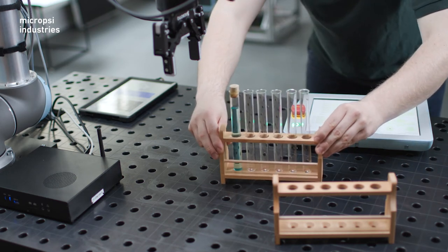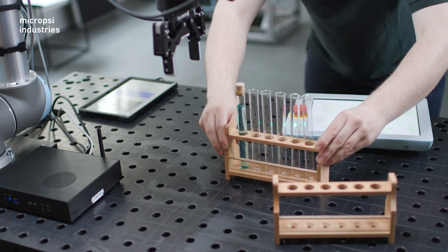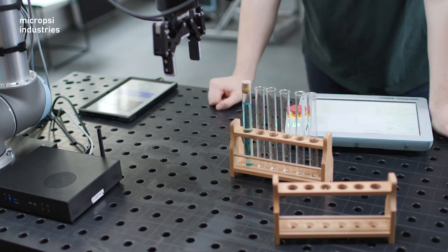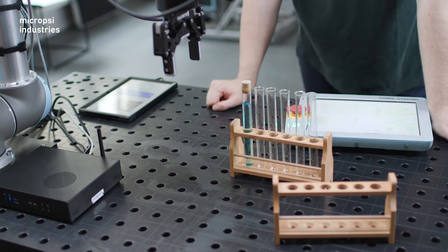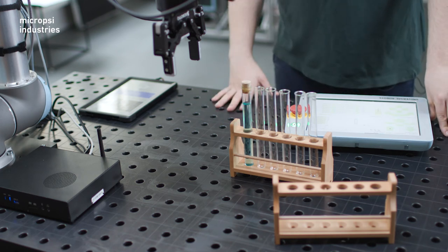You see that the position of the tray can vary and therefore also the position of the beaker, meaning the beaker is not at the exact same position every time the robot is approaching. And this is normal for workpieces delivered in a factory setting.